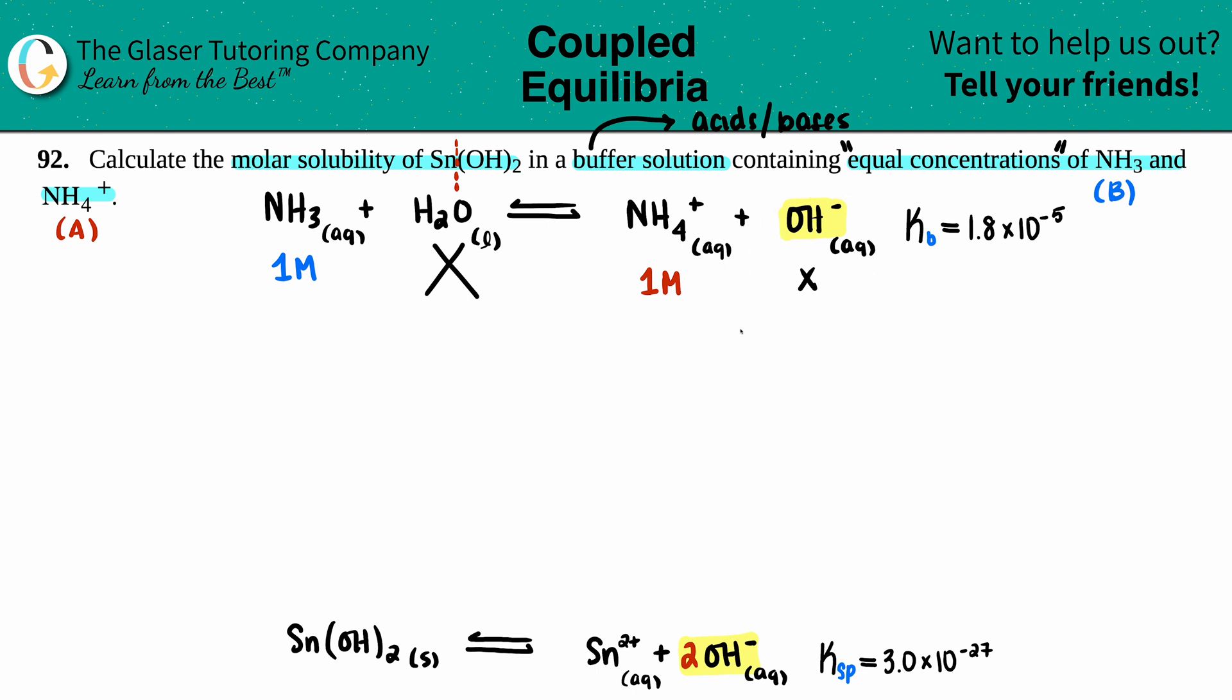It has to go with the coefficients. There was only one OH-, so that's just x. I just want to make sure we don't think the whole thing gets canceled out.